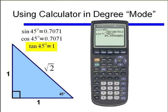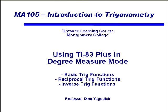Let's look at this for tangent. If I press SECOND and then tan inverse, and instead of 45 degrees I give it an output of 1, hopefully I will get an angle of 45 degrees. And there we have it — using the TI-83 Plus in degree measure mode, going over basic trig functions, the reciprocal trig functions, and the inverse trig functions.